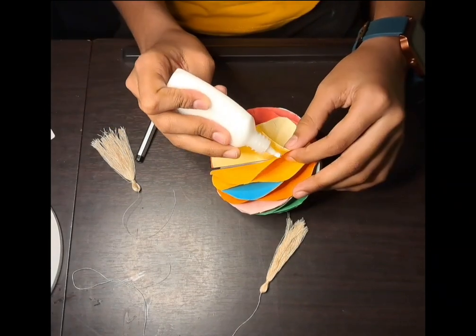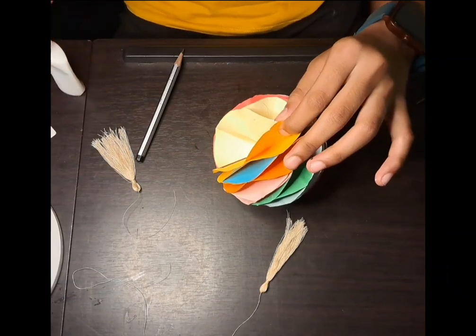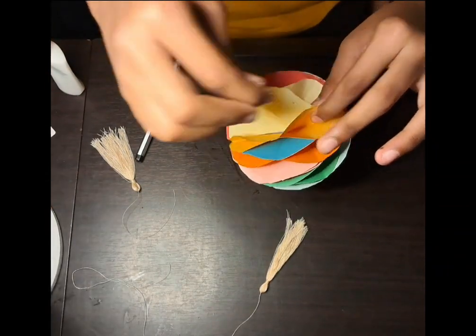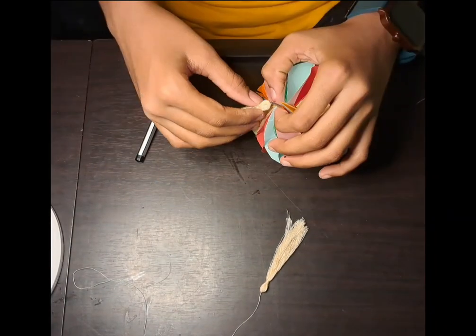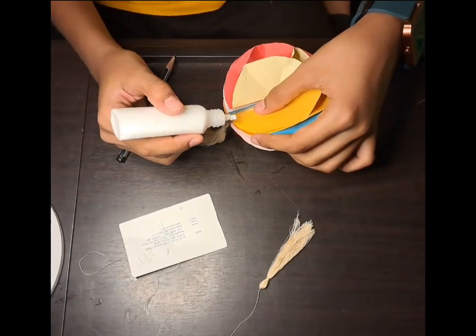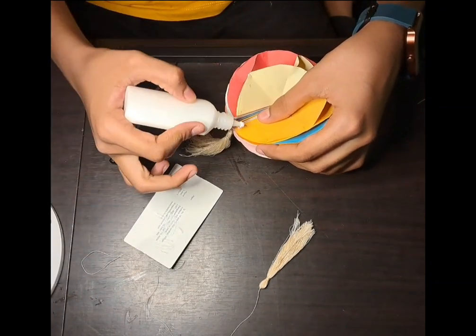Now take the glue and apply it. Now press it tightly just in case our wall hanging won't come off. Remember to tie a fancy thread. You can apply the glue on the thread however much you want. Make sure it is stuck properly and press.